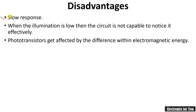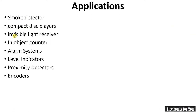They are sensitive to different light sources like fluorescent light, sunlight, incandescent lamps, lasers, neon bulbs, and flames. Now let's see some disadvantages. Photo transistors are slower compared to photo diodes, and when the illumination is low the circuit cannot detect it effectively. Photo transistors are also affected by electromagnetic energy.